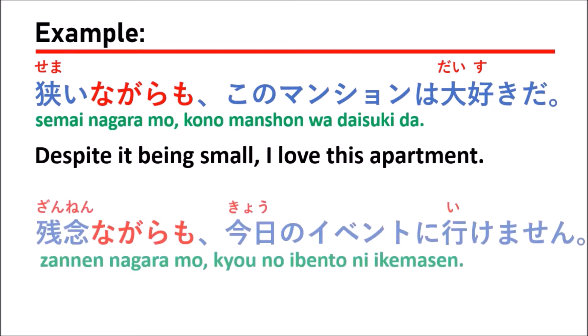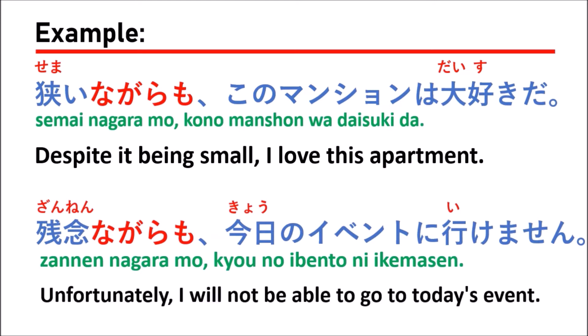The next example: zannen nagaramo, kono manshon wa daisuki da. Which means 'unfortunately, I will not be able to go to today's event.'